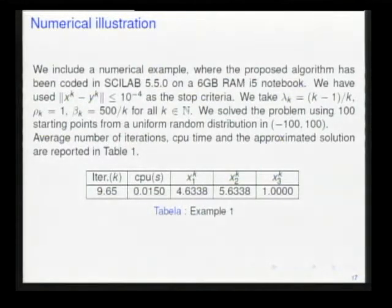We report our numerical experience. We use this computer. The stop criteria we use. This is the parameter of convex combination. We solve the problem using 100 starting points from a uniform random distribution in this interval. We take the average number of iterations, CPU time, and we put the approximate solution in the table. The average time and the solution.